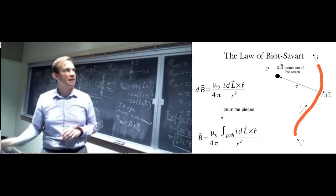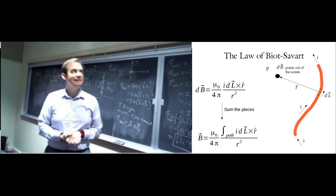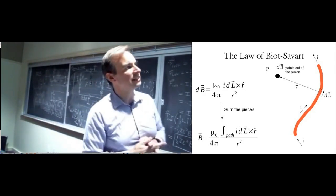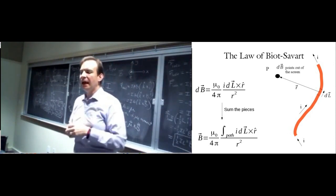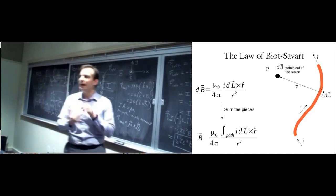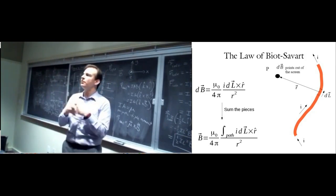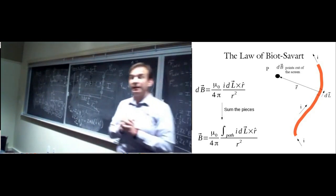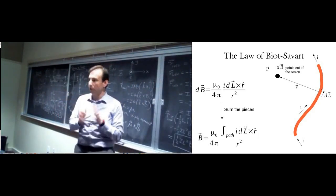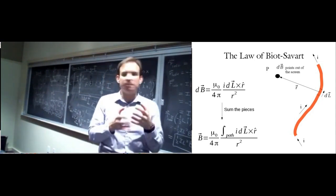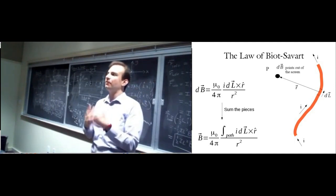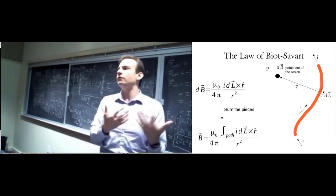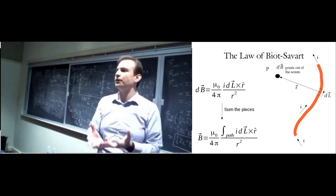Let me show you the Biot-Savart law — dust off your calculus, because here we go. It looks complex, but in the next lecture I'll show you how to calculate the magnetic field from a straight wire, and if there's time, from a circle too. The key things we've learned about magnetism so far: magnets cause other magnets to repel or attract; electric charge can be deflected by magnetic fields; and moving charge generates magnetic fields — that's what the Biot-Savart law encapsulates.